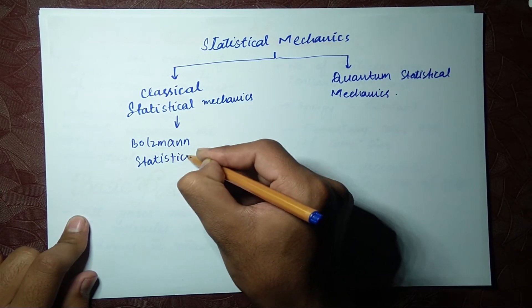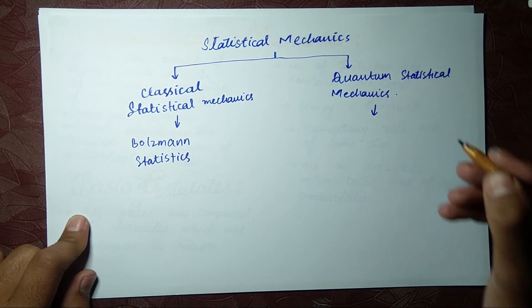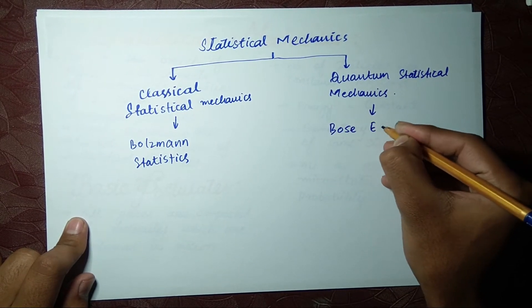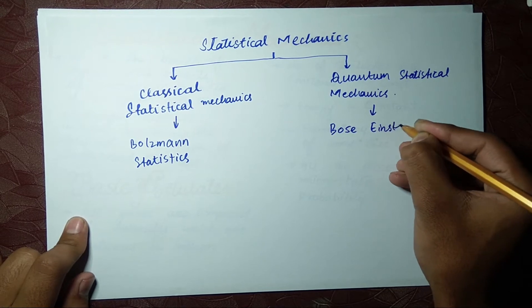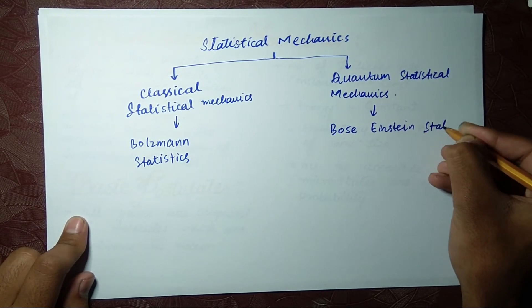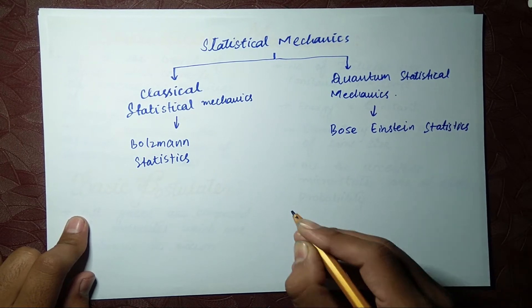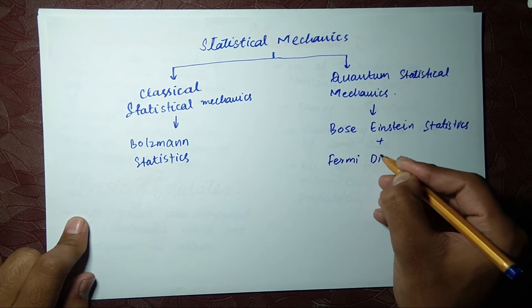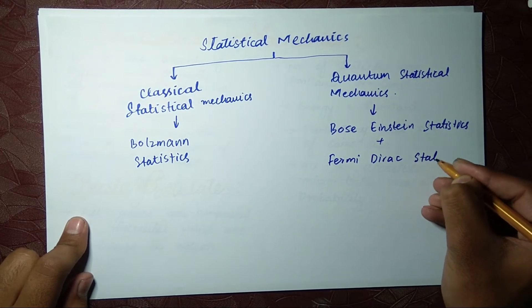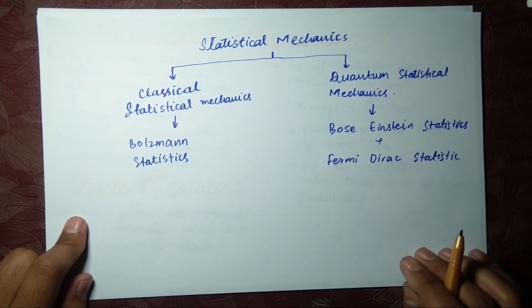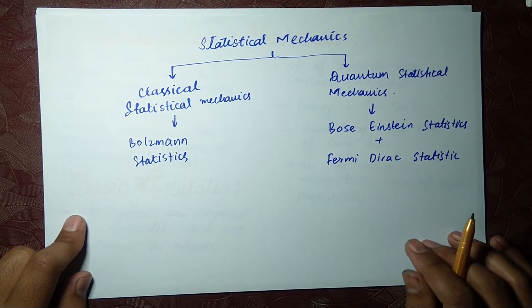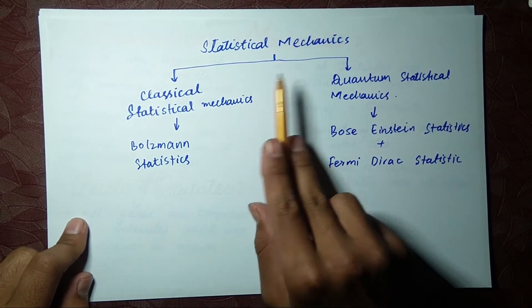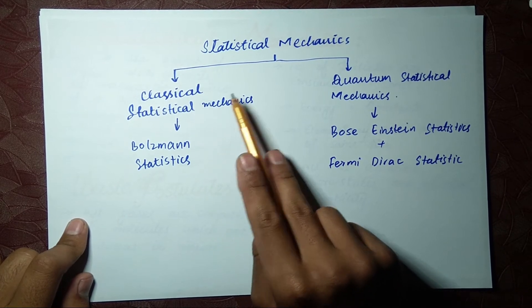And in quantum mechanics we deal with Bose-Einstein statistics plus Fermi-Dirac statistics. Okay, this is the basic flowchart that we have for statistical mechanics. It is further divided into two main types.